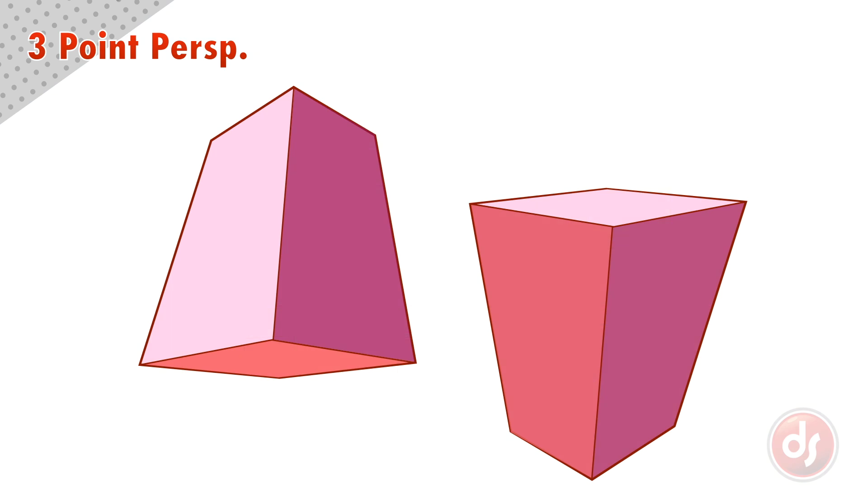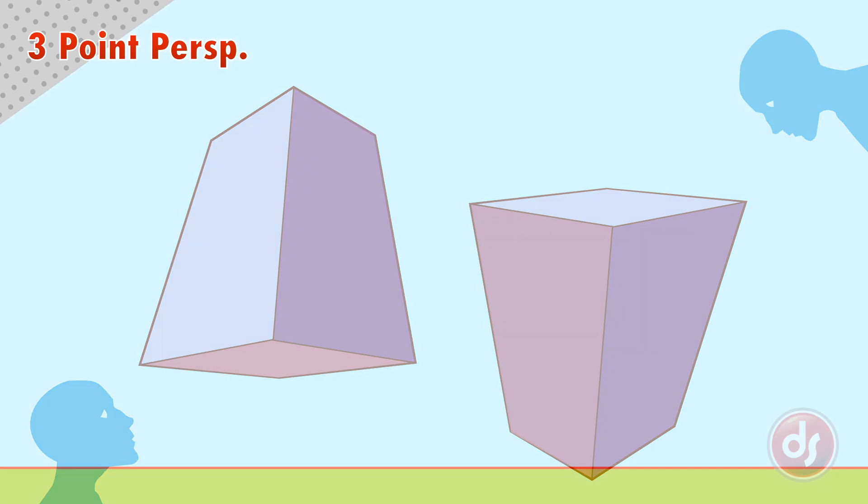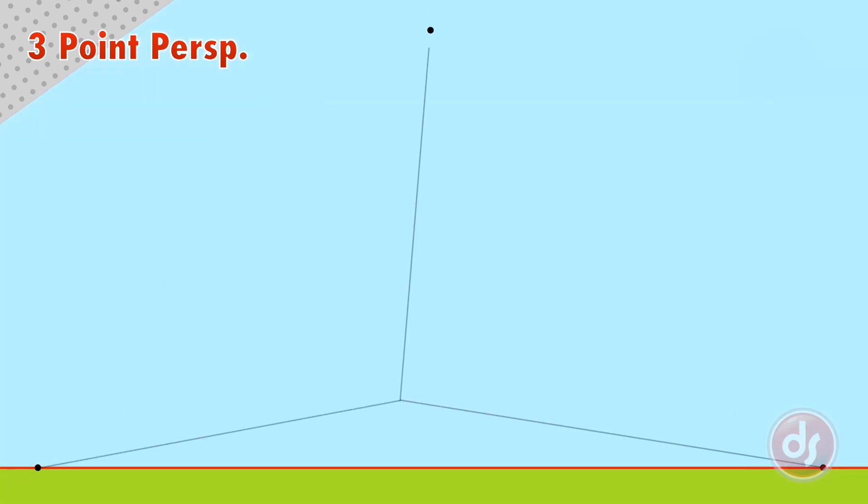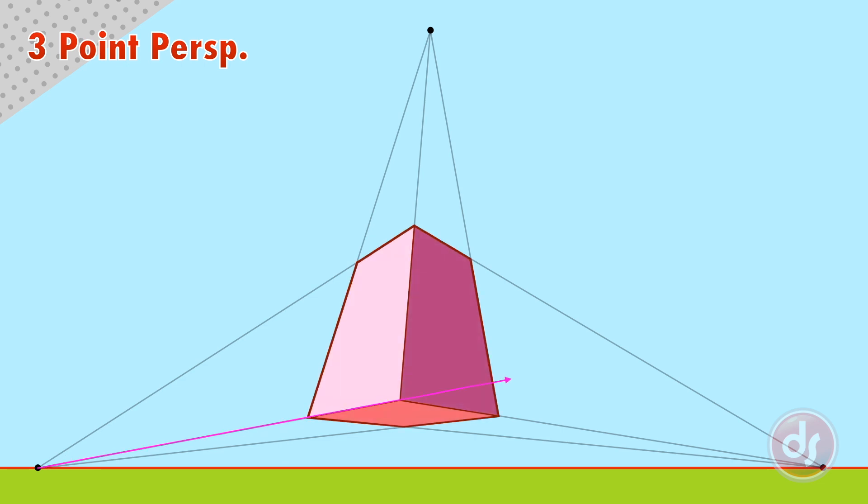Three point perspective happens when we tilt our head up or down towards an object. Since we have three points, all three line systems vanish. X and Z vanish at the horizon like in two point perspective, but the Y lines will vanish at a special point above or below the horizon line.